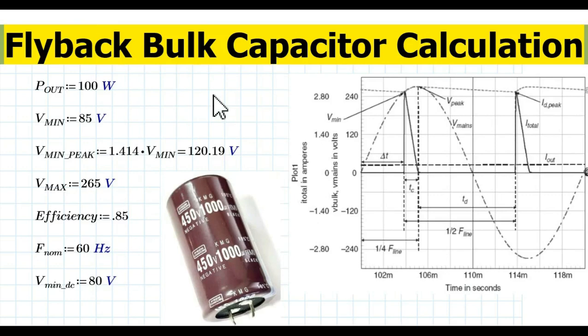This capacitor is sometimes called a DC link capacitor, and sometimes called a raw DC capacitor. Don't get confused by the different terminology — it is called bulk capacitor, DC link capacitor, or raw DC capacitor, but they all refer to the same component.